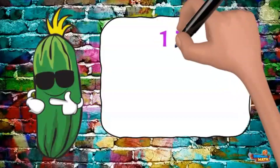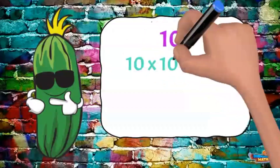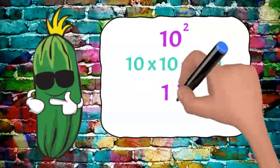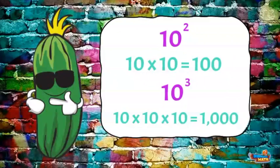Sometimes exponents are used to denote values. For example, 10 to the second power means 10 times 10, or 100. 10 to the third power means 10 times 10 times 10, or 1000.